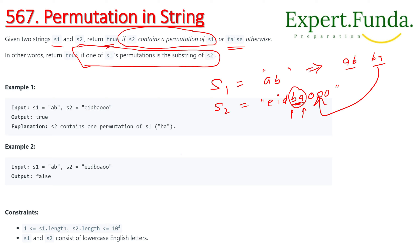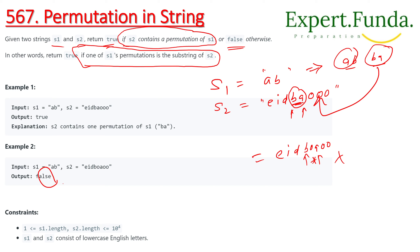Similarly, if s2 is different — for example, e, i, d, b, o, a, o, o — and we try to find 'a, b' or 'b, a' in this string, there is no match. 'b' is not adjacent to 'a'; there is some element in between. So this cannot be counted, meaning we don't have the permutation elements of s1 in s2 as a substring.